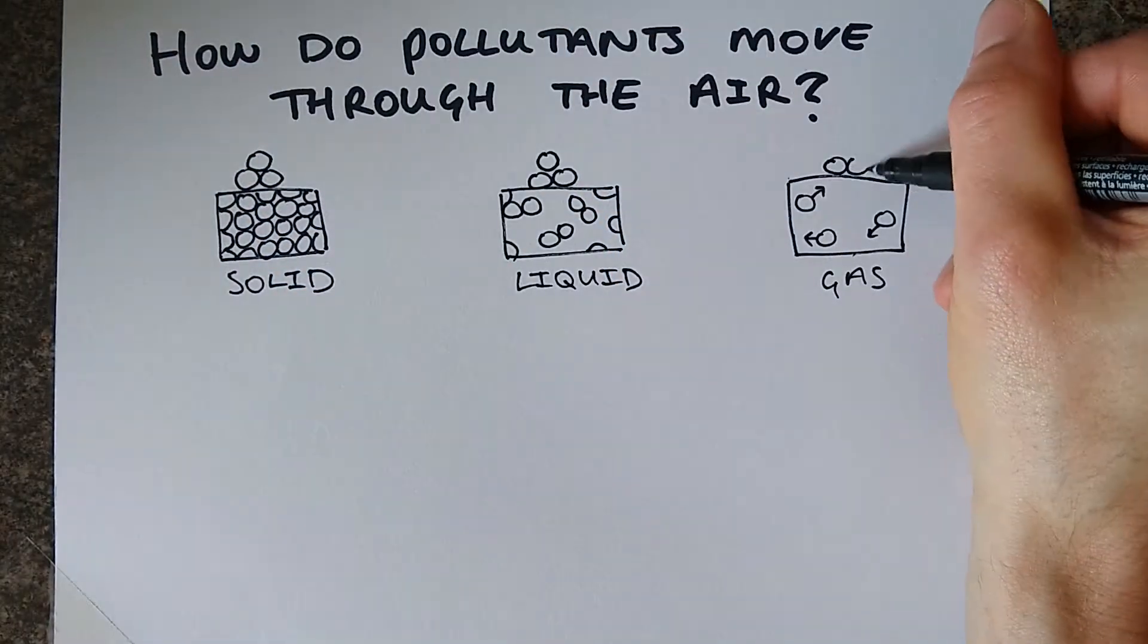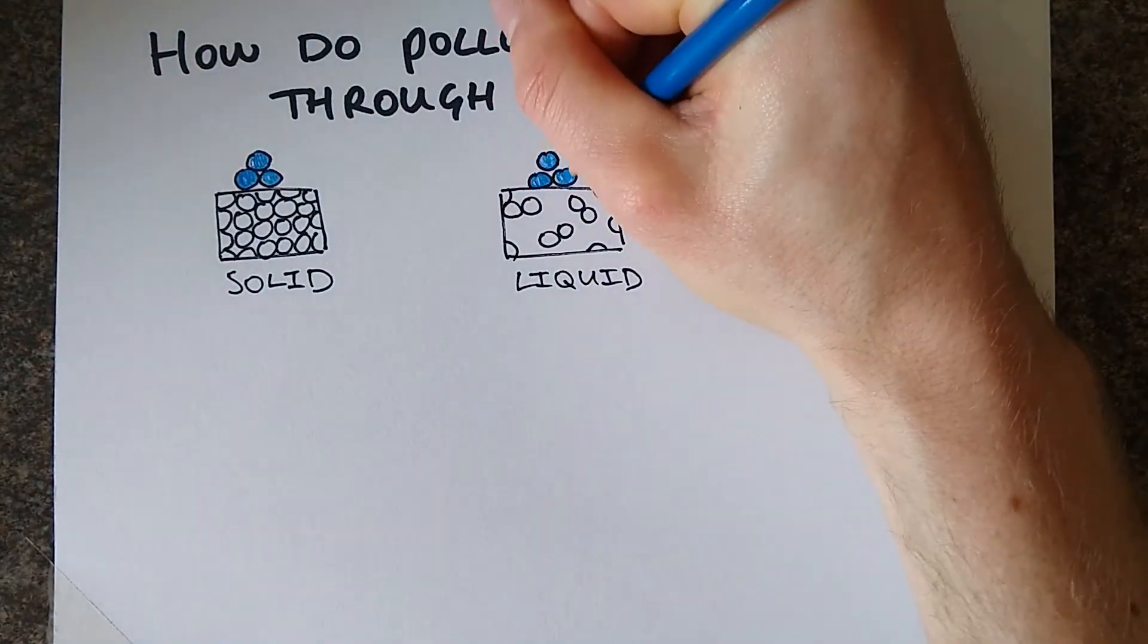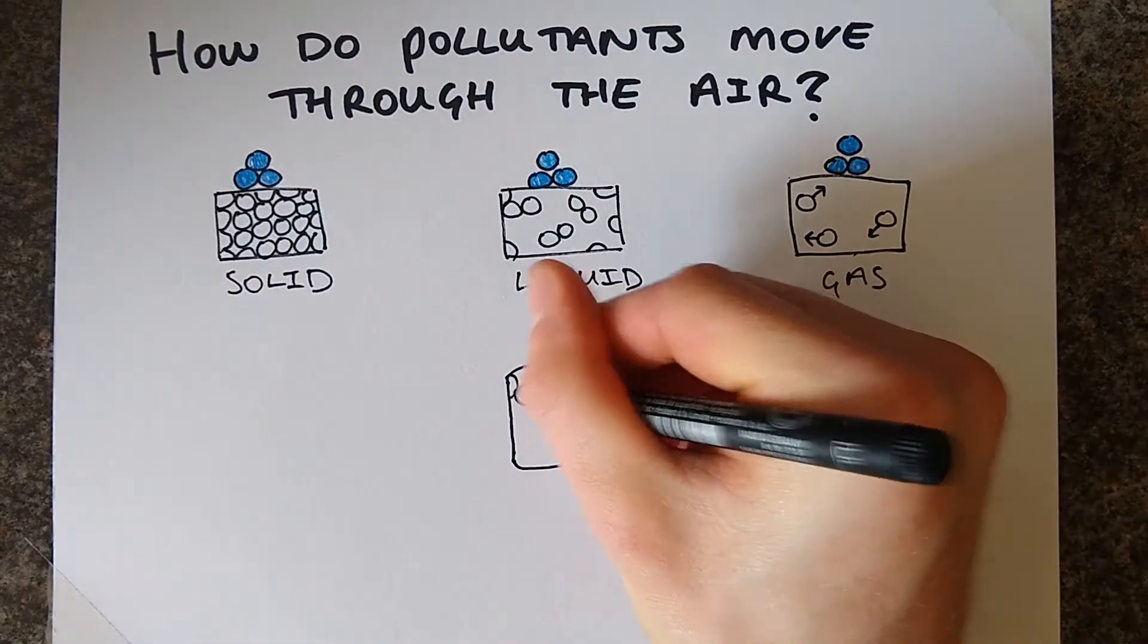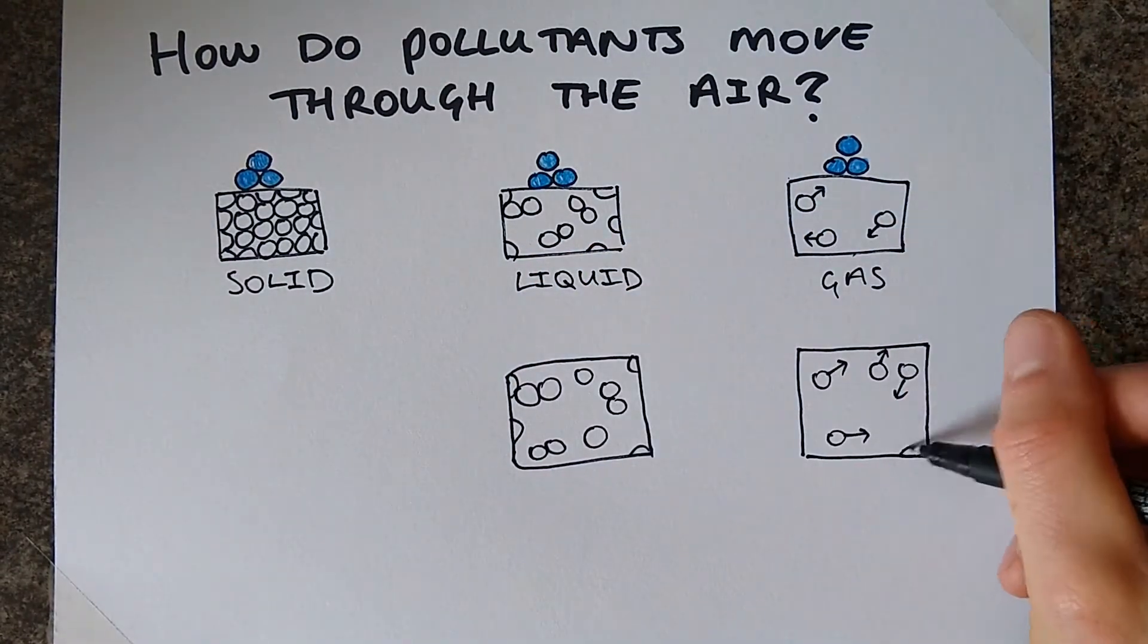Gases have loads of space and move around a lot. If we were to add a second substance like a pollutant, colored blue, it would want to move in these states of matter such that it was evenly distributed. However, it would not be able to do this in a solid because it is too tightly packed.